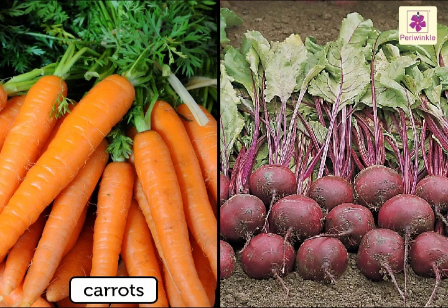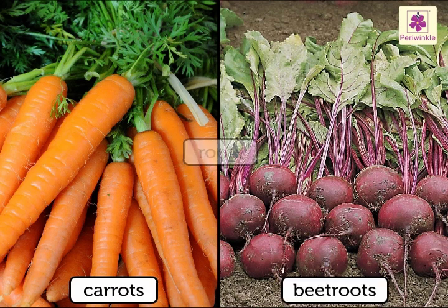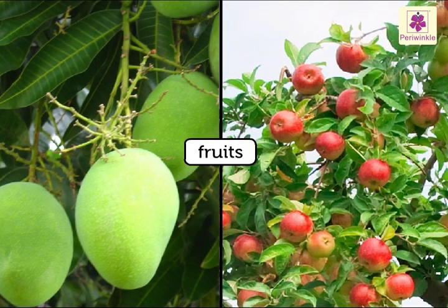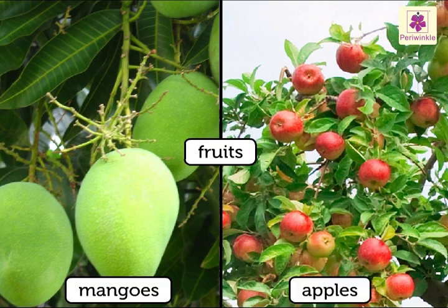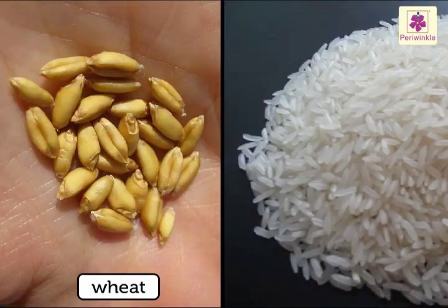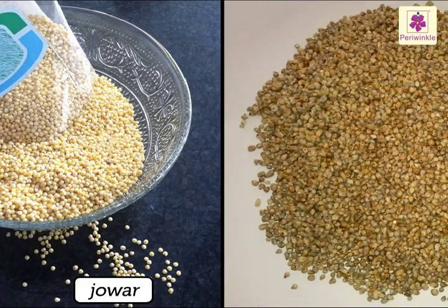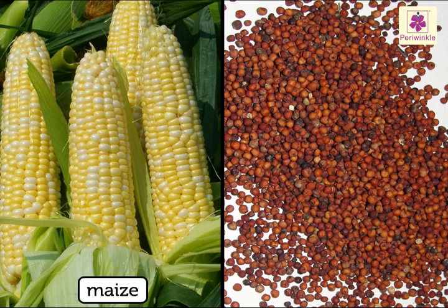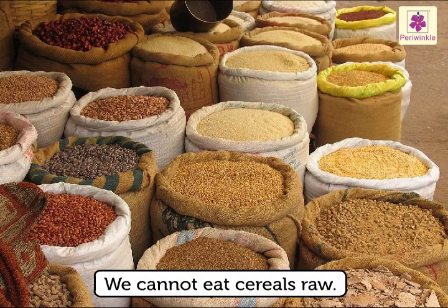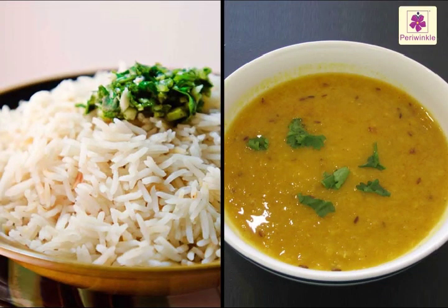Carrots and beetroots are roots. We get fruits like mangoes and apples from plants. We also get cereals like wheat, rice, jowar, bajra, maize, ragi, oats, and barley from plants.